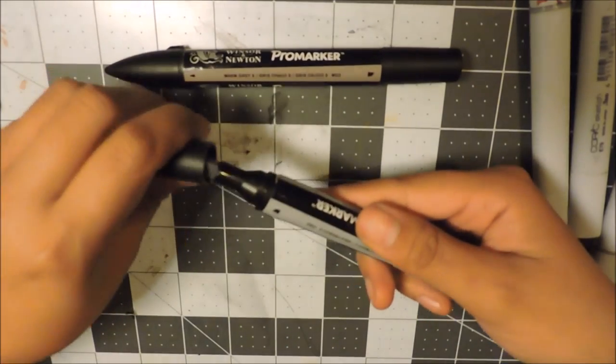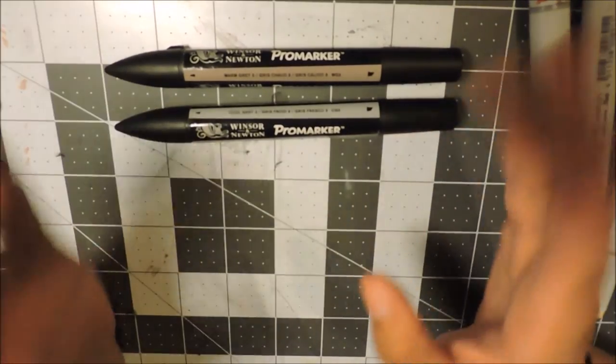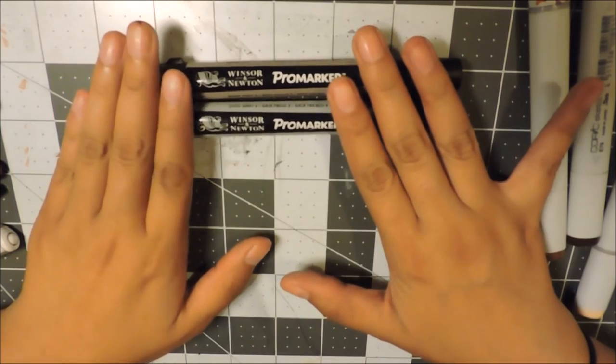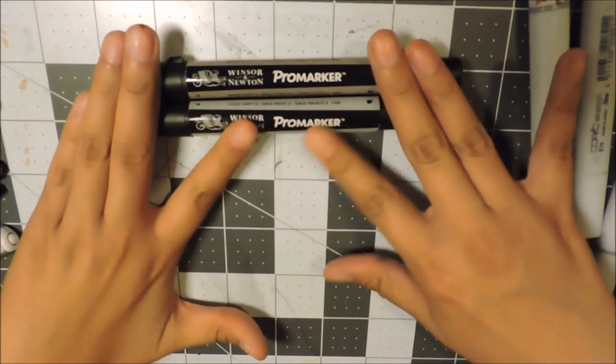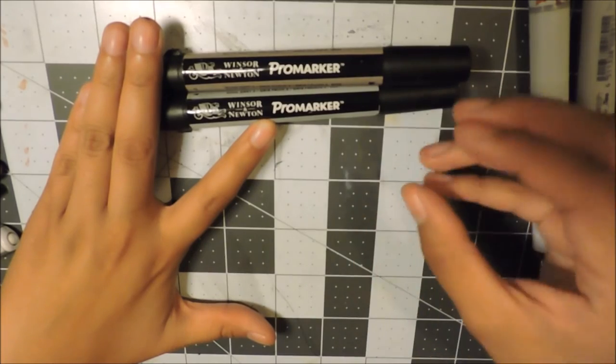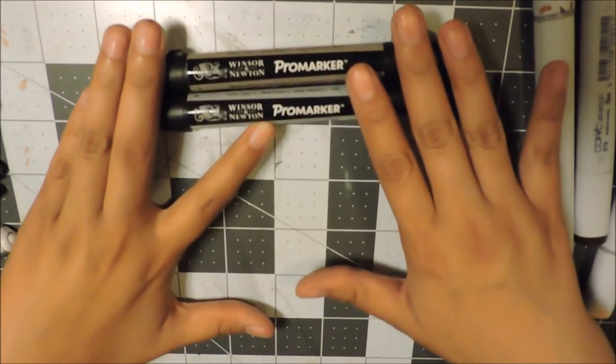I only have two Pro markers which I actually use a lot just because I feel like instead of getting a Copic Sketch or Ciao in a gray, I like the Windsor Pro markers gray better.